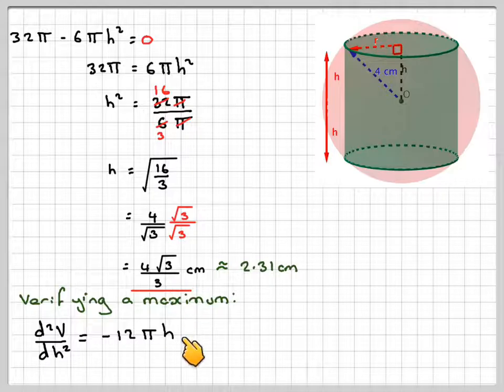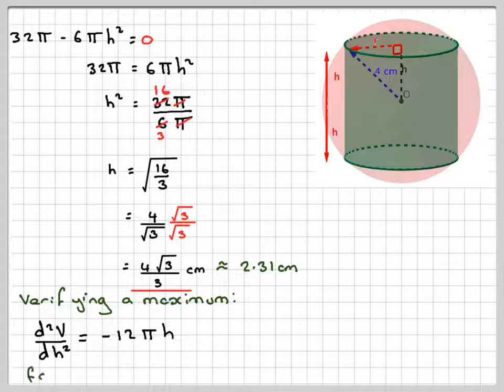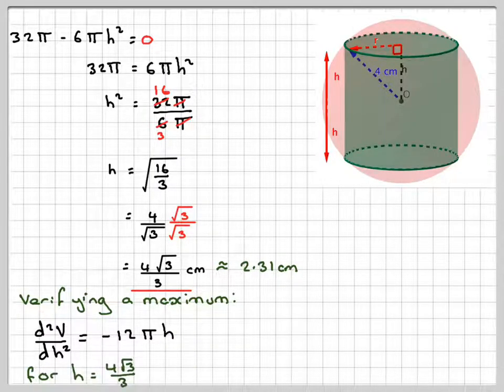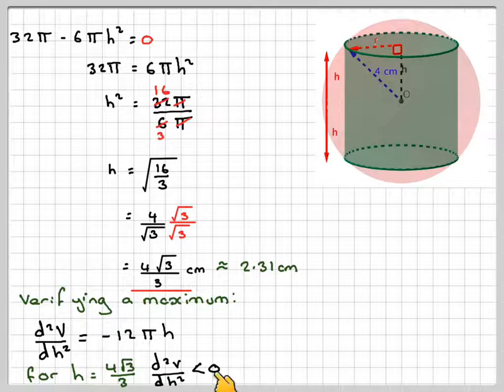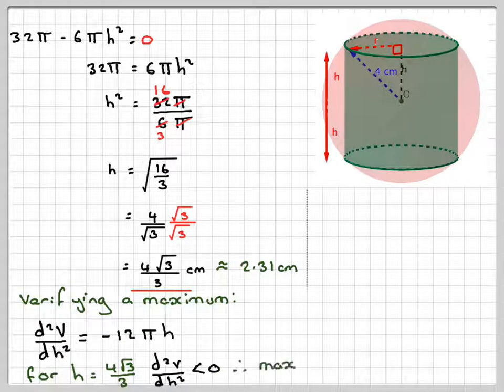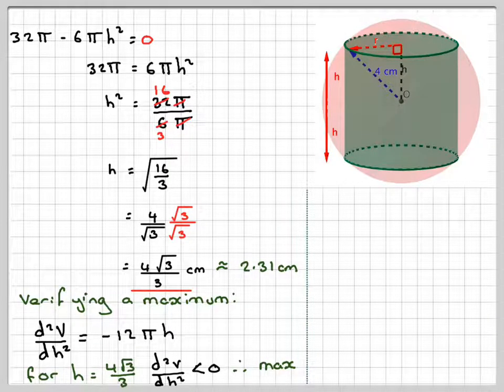Now we take our value of h and put it in here. Because h is positive, then the second derivative will be negative, i.e. less than 0, which means that we have a maximum point. So we've verified it as a maximum.